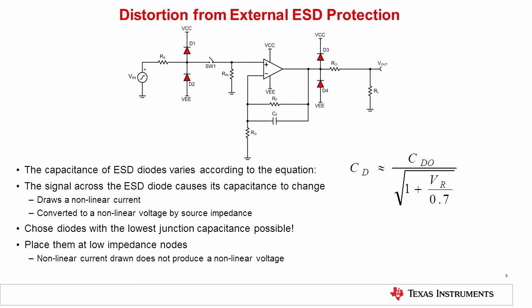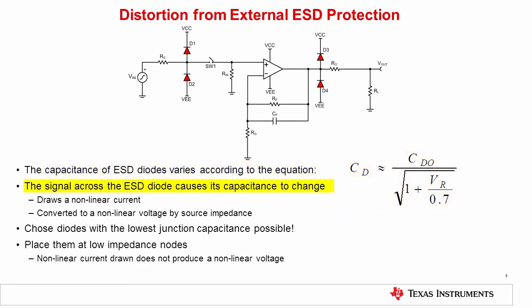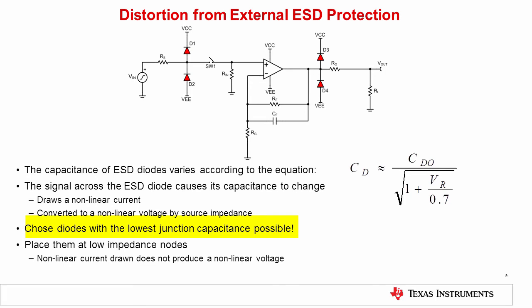Distortion from ESD protection is caused by the same effects as op amp input stage distortion — the reverse bias junction capacitance will vary with applied voltage. As the signal applied to the ESD protection diodes changes, their capacitance will change, causing them to draw a nonlinear current, which is converted to a nonlinear voltage by the source impedance. There are ESD protection diodes on both the input and the output, but the input ESD diodes introduce distortion whereas the output diodes will not, because the op amp output impedance is very low. The general recommendation is to first choose diodes with the lowest junction capacitance possible, and second, place the diodes at low impedance nodes if possible.